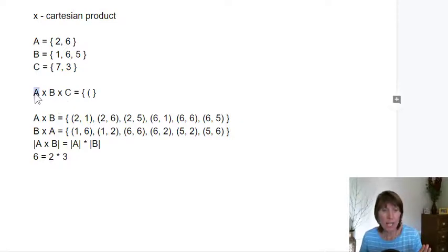The first element in the ordered triple will come from A. So in this case, we'll get two from A. The second one will come from B, so I'll get a one from B, and the third one will come from C. Each ordered triple will follow that pattern: the first element from A, the second from B, and the third from C.